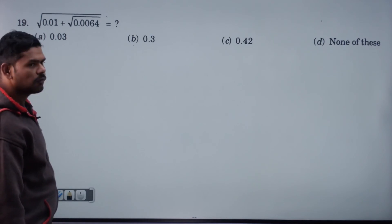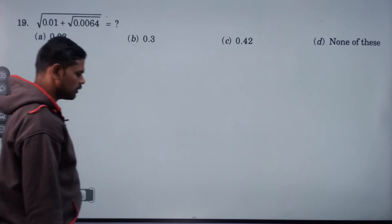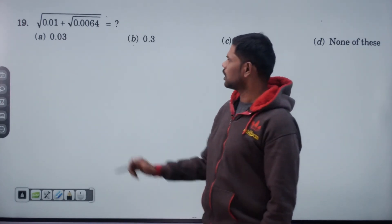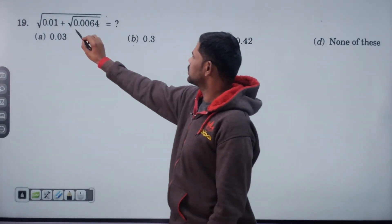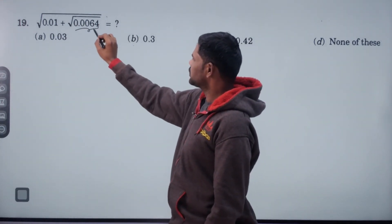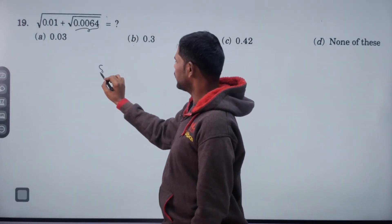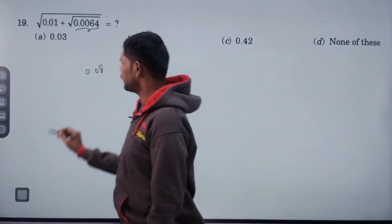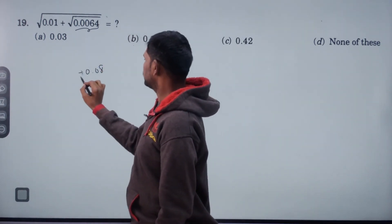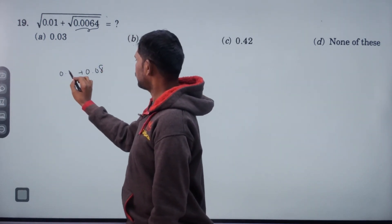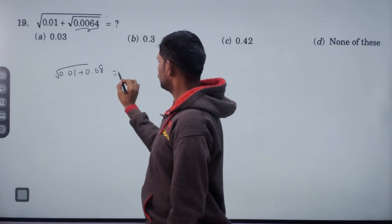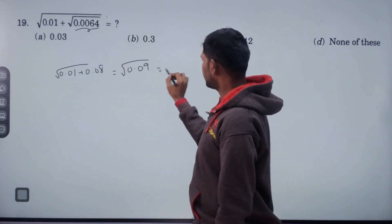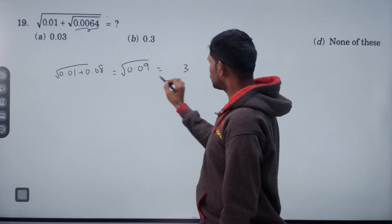Square root of 0.01 plus root of 0.0064. First, 0.0064: root is 0.08. 0.01 plus 0.08 is 0.09. Root of 0.09 — 2 decimals give 1 decimal — answer is 0.3.